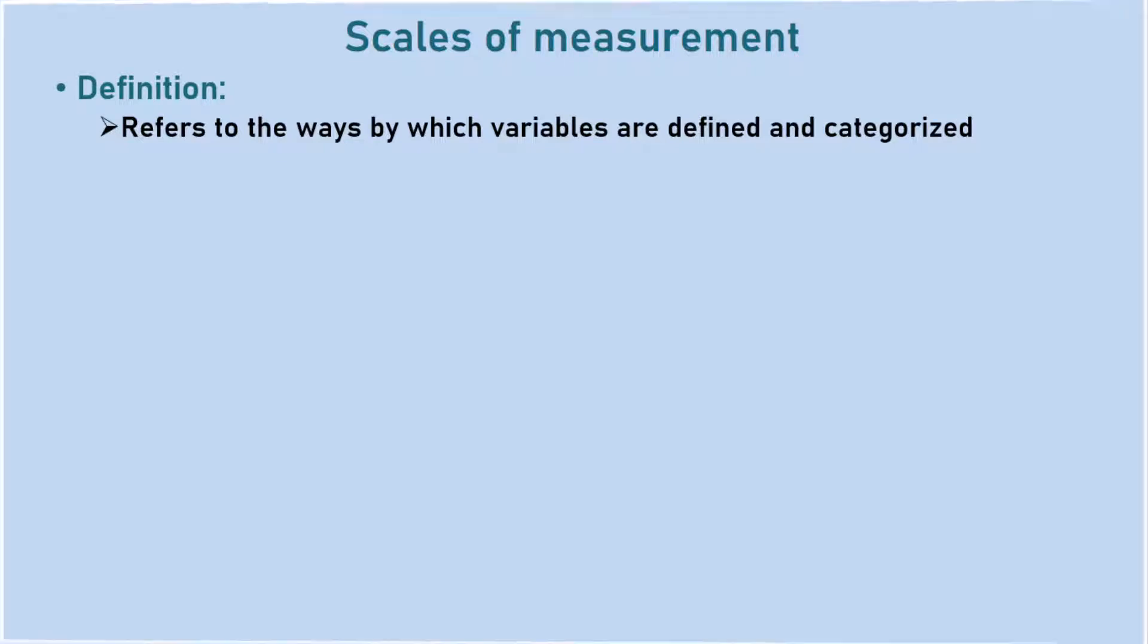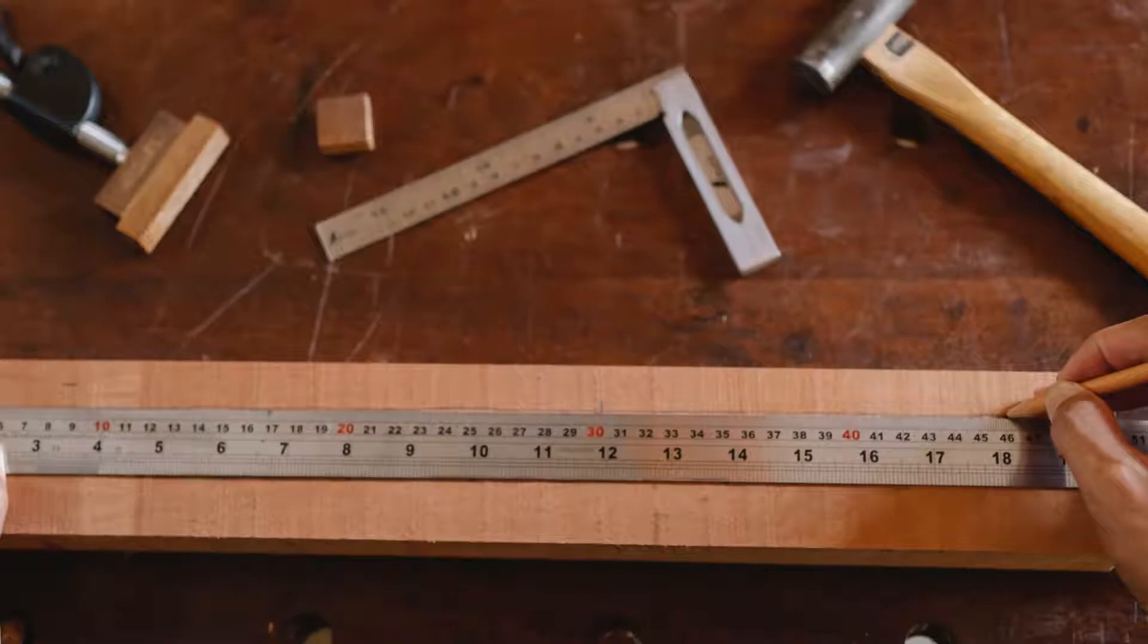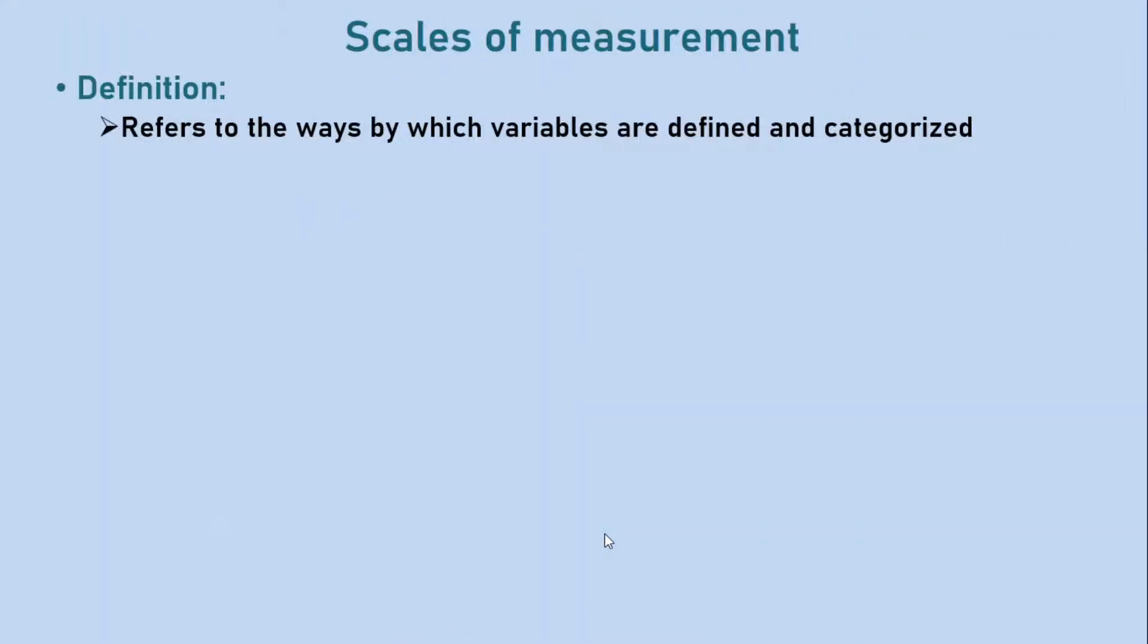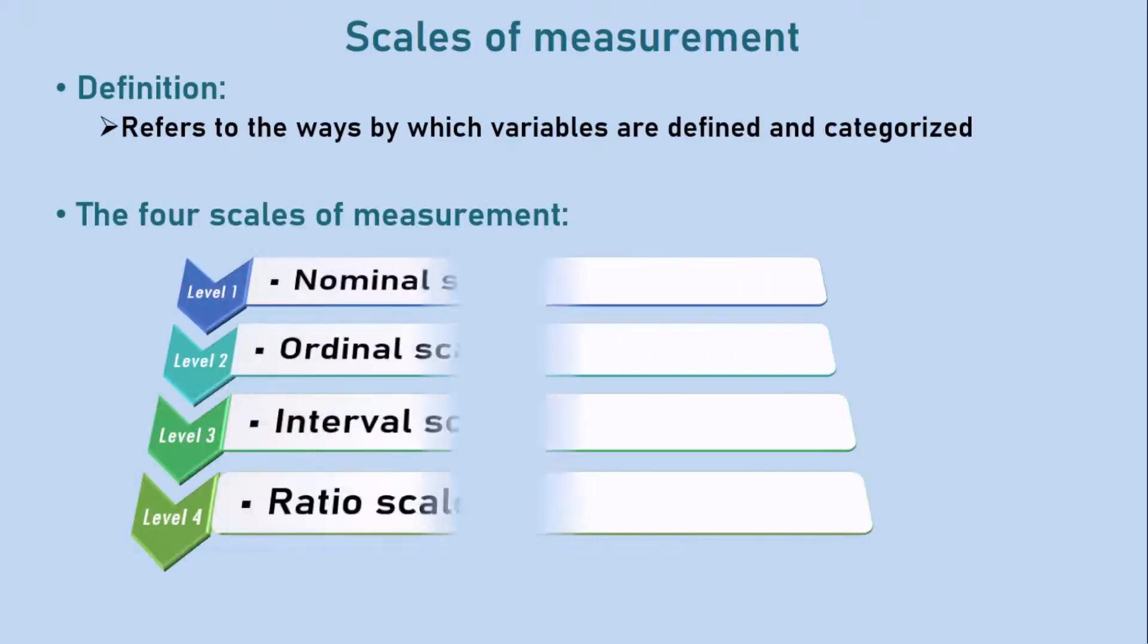See an illustration from this picture. Here we are trying to measure the length of this wood with a ruler. In this case, the ruler becomes a scale by which we are measuring the variable length. Similarly, in statistics, we can put any variable in a research study on at least one of four scales or levels of measurement.